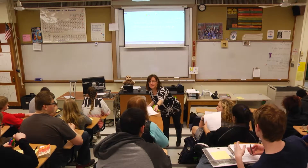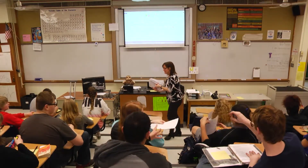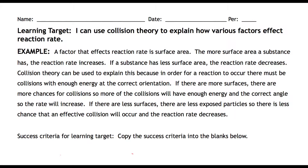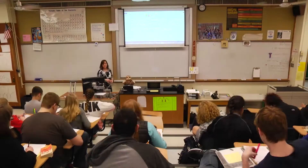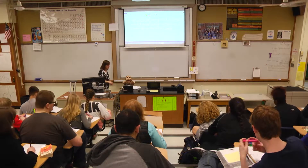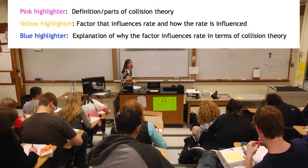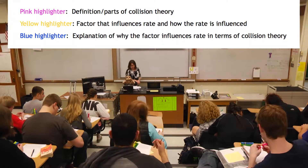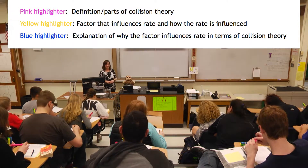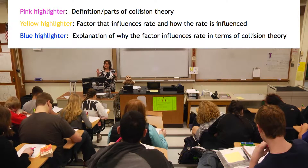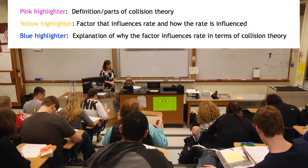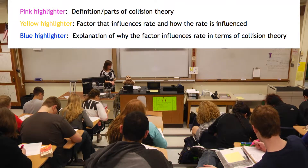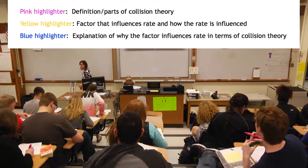What you're looking for is the way this checklist could be applied to the example at the top of the page. You're going to use your pink highlighter on that example to highlight anything that's a definition or part of collision theory. When you use your yellow highlighter, you're going to highlight the factor that's mentioned in that example — the factor that affects reaction rate. And your blue highlighter is for the explanation in terms of collision theory.